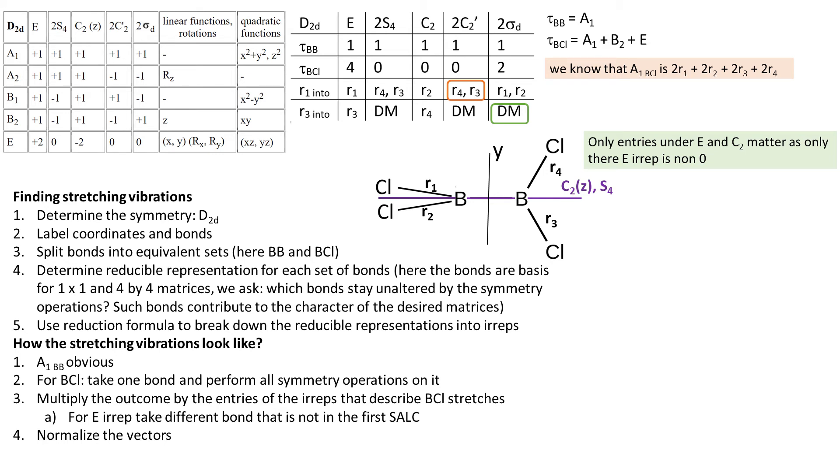Now let's draw the stretching vibrations. Our starting point is the A1 fully symmetric stretch that we already talked about. All four BCl bonds are stretching outwards. In other irreps, we have some terms that are negative. For instance, for B2, we have minus R3 minus R4.